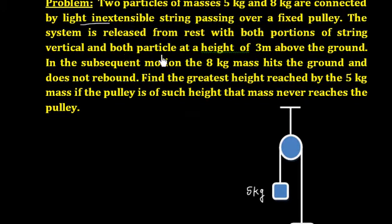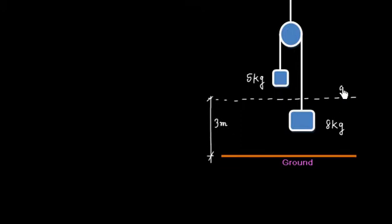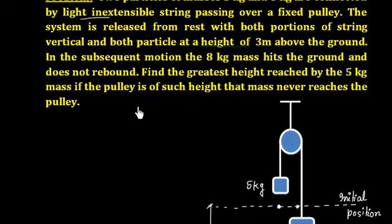When both portions of the string are vertical, both particles are at a height of 3 meters above the ground. So initially both are at the same level. Let us say initially these two objects are at this level — that is 3 meters from the ground. So one object is here and another object is here in the same plane.